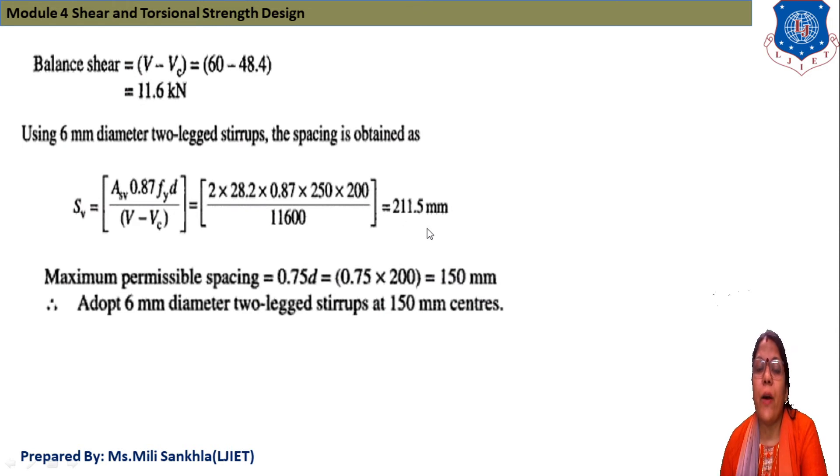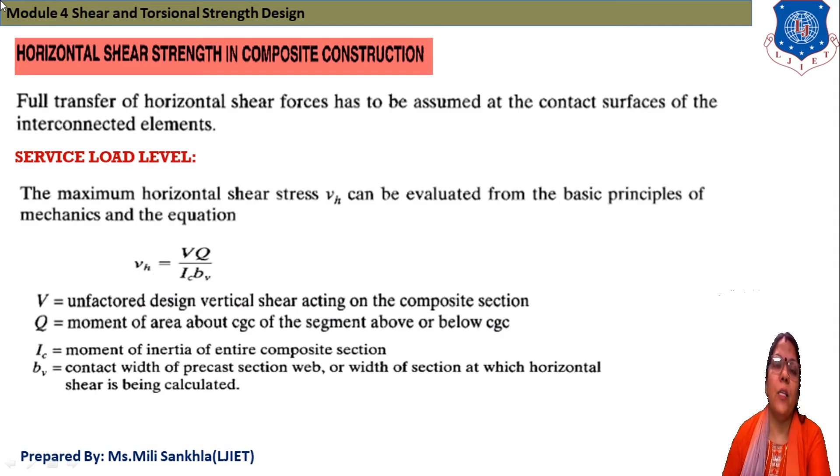Maximum permissible spacing given in code is 0.75d or 150 mm. Adopt 6 mm diameter 2-legged stirrups at 150 mm center.